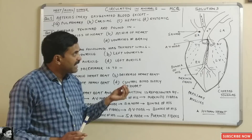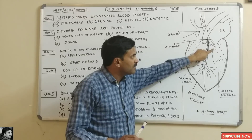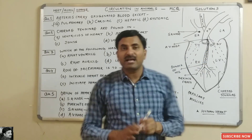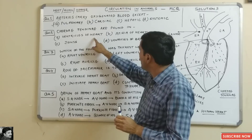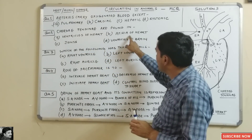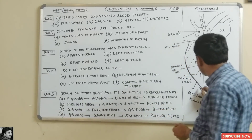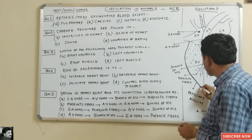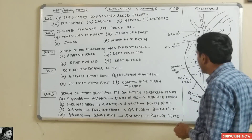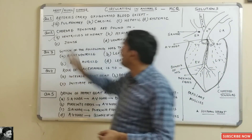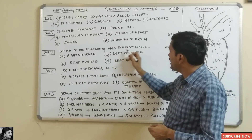The papillary muscles give rise to the chordae tendineae, which extend up to the tricuspid and bicuspid valves. The options are: ventricles of the heart, atria of the heart, joints, or ventricles of the brain. The answer is the first option — ventricles of the heart.